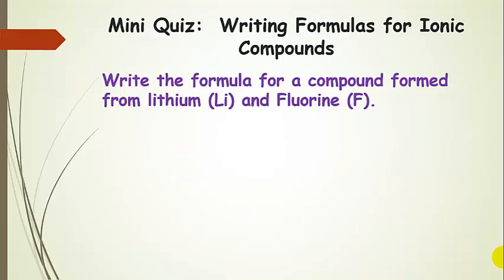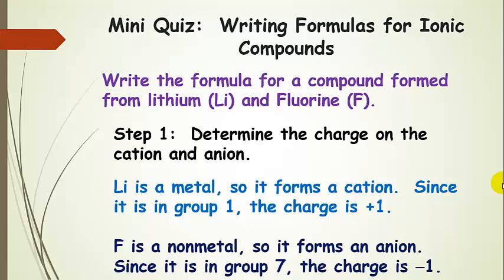Let's practice a little bit. Pause the presentation and write the formula for a compound formed from lithium and fluorine. Use your periodic table and what you know about each cation and anion. Step one: determine the charge on the cation and the anion. Lithium is a metal — it forms a cation, losing an electron. It's in group 1, so it's plus 1. Fluorine is a non-metal; it's in group 7, so it's a halogen. It has a minus 1 charge — it gains one extra electron to be like a noble gas.